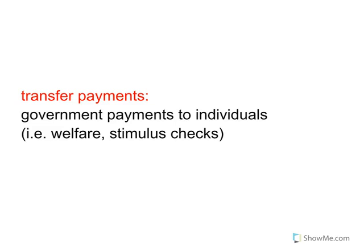Then finally, transfer payments — which we'll also talk about in macro. These are government payments to individuals where no goods are exchanged. In other words, the government is not providing these payments in exchange for goods and services. Examples include welfare or stimulus checks, where the government simply transfers money to individuals with no expectation of a good or service in return.